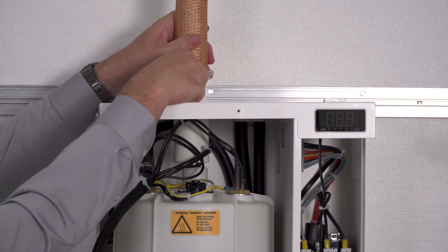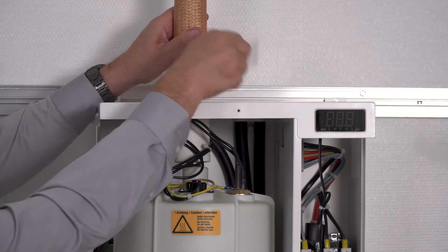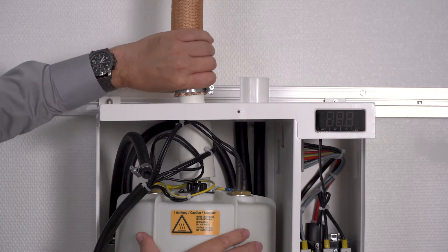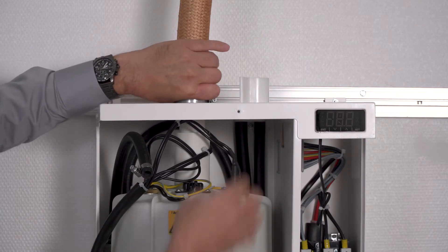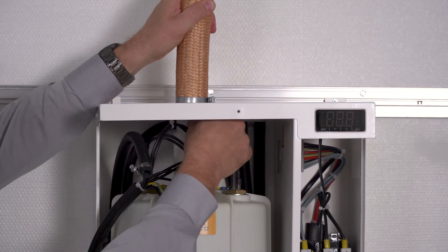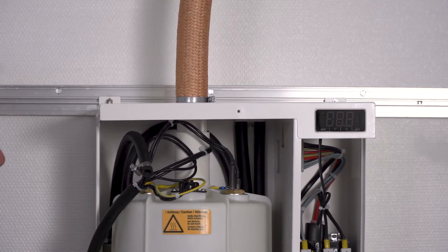And then pull off the clip, which is at the top of the steam hose adapter. And then push the steam hose onto the steam cylinder. Then I attach the steam hose adapter again with the clip. And the steam cylinder is now firmly fixed.